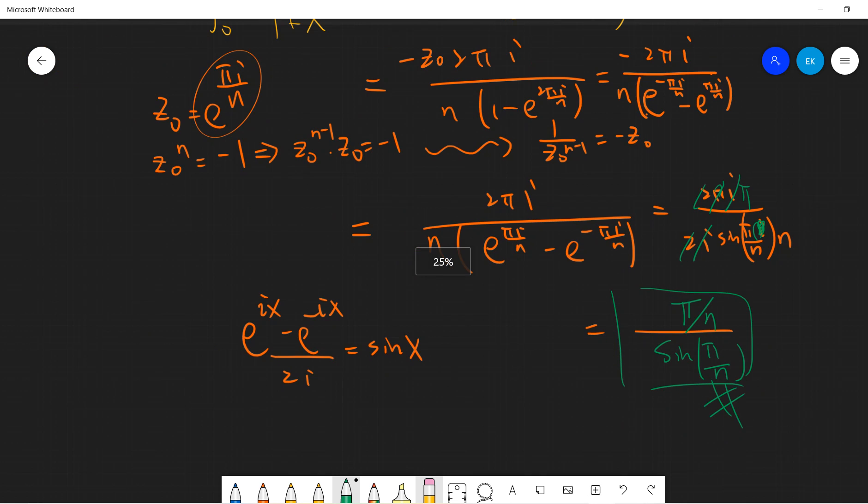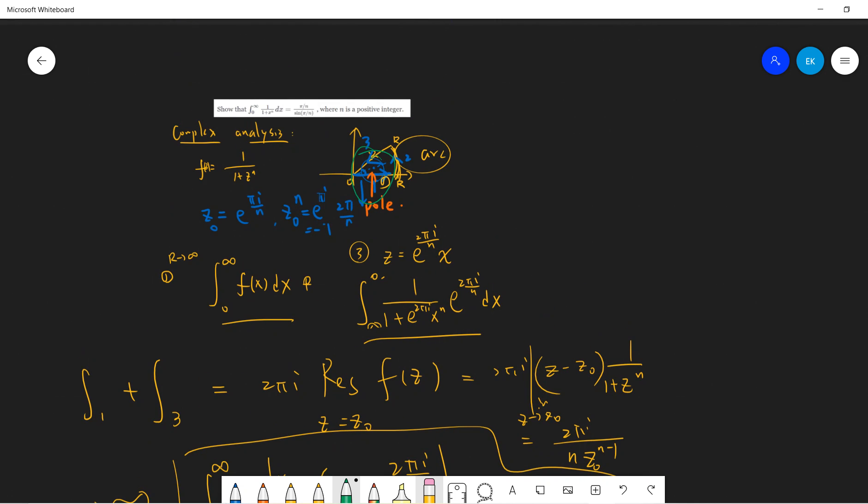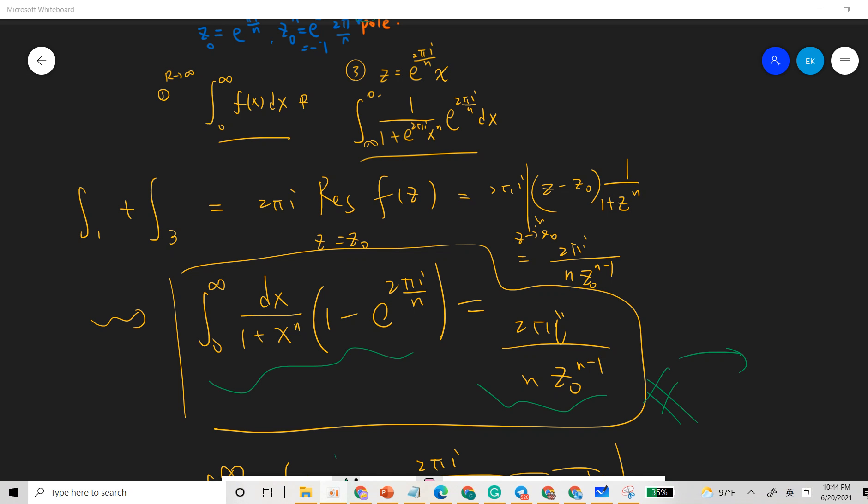So calculation is a little bit lengthy, but the idea is that you pick a contour and pick the only pole here. I think once you get this identity, then you're ready to write down all the details. So very easy. See you guys next videos.